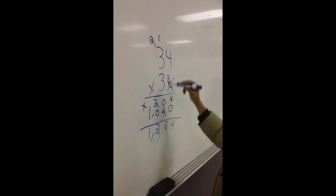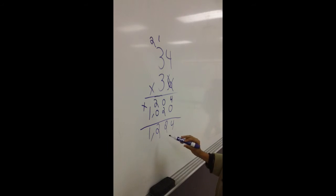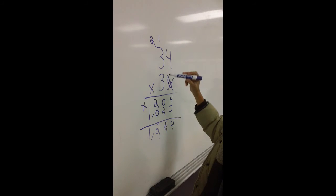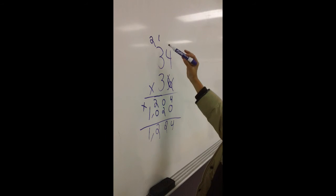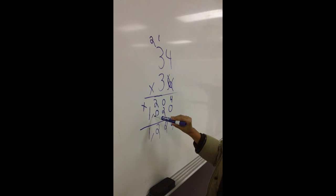Then you exit this out and you put a 0 down here. Now multiply 4 times 3 equals 12. Then you multiply 3 times 3 and then after you do that it equals 9. And then you add 1 that equals 10.